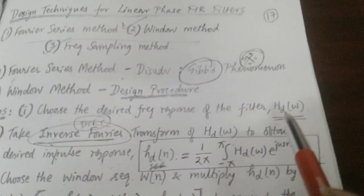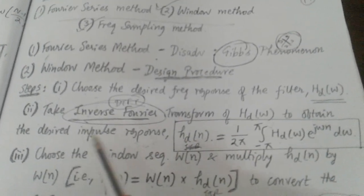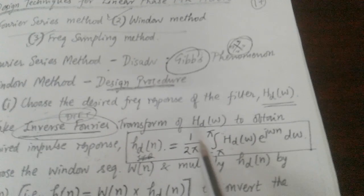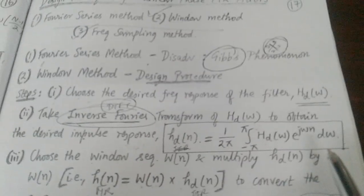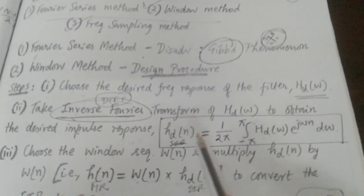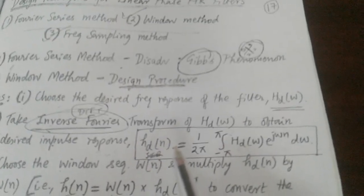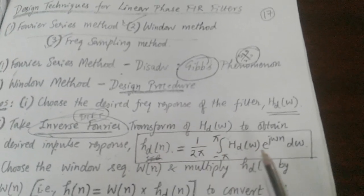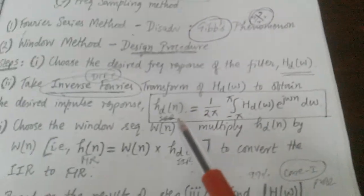Next, the desired frequency response HD(ω) is given, and from that we have to find the small h, which is the impulse response. Going from capital H to small h means we take the inverse DTFT. The inverse DTFT formula is: h_D(n) = (1/2π) ∫ from −π to π of H_D(ω) · e^(jωn) dω. When we compute this, the answer will be in terms of a sinc-type function, and HD(n) extends from minus infinity to plus infinity.